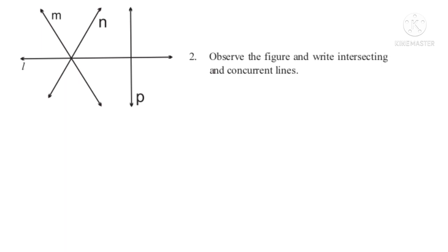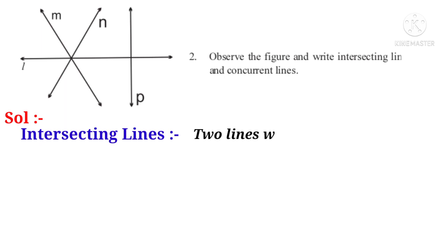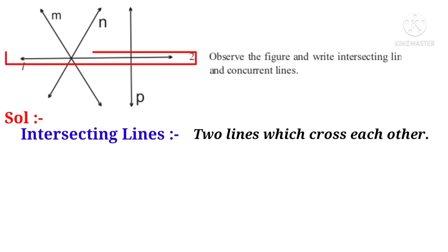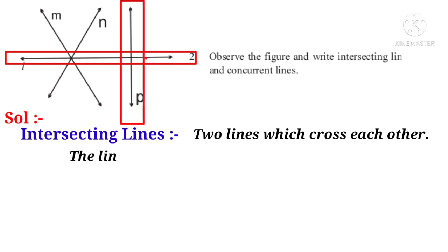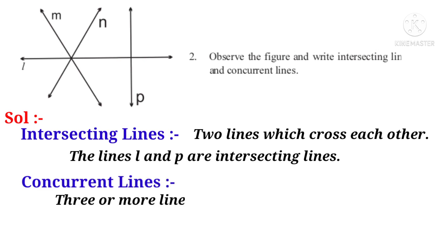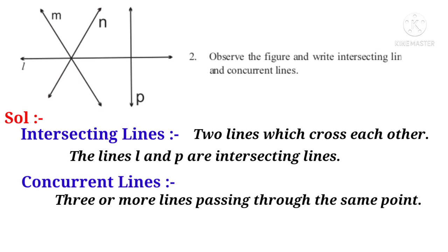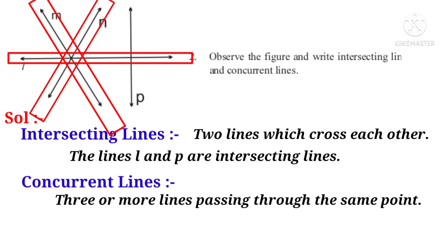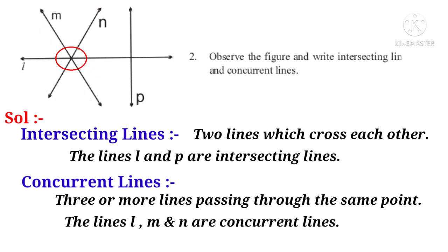Now let us do the second problem. Observe the figure and write intersecting lines and concurrent lines. Solution. Intersecting lines: two lines which cross each other are called intersecting lines. In the above figure, lines L and P are crossing each other at a single point, so lines L and P are intersecting lines. Concurrent lines: three or more lines which pass through a single point are called concurrent lines. In the above figure, lines L, M and N are passing through a single point, so lines L, M and N are concurrent lines.